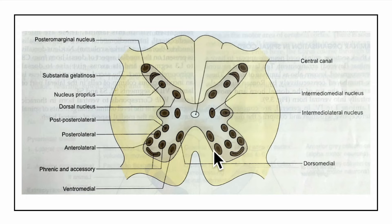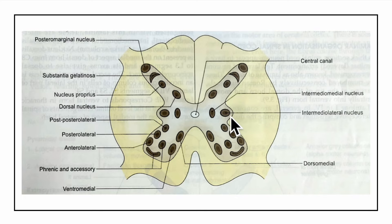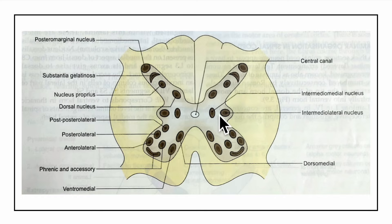Moving on to the nuclei in the lateral horn of the spinal cord, there are two main nuclei: the intermediolateral nucleus and the intermediomedial nucleus. The intermediolateral nucleus acts as both an efferent and afferent nuclear column. It is seen at two main levels: T1 to L2, where it gives rise to preganglionic sympathetic fibers, and S2 to S4, where it gives rise to preganglionic parasympathetic fibers. The intermediomedial nucleus is mostly the internuntial neuronal column, also known as interneurons or relay neurons.